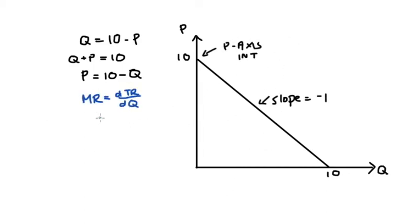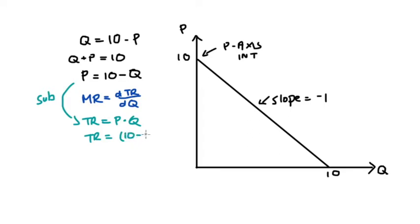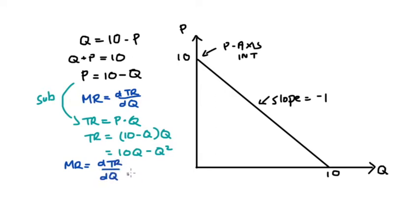Recall that marginal revenue is equal to the derivative of the total revenue function with respect to Q, and total revenue is equal to P times Q. An easy way to do this is to express total revenue as a function of only our quantity variable. Substituting in our inverse demand function P = 10 minus Q into our total revenue function, we're left with total revenue equal to (10 minus Q) times Q, which equals 10Q minus Q squared. Then we take the derivative to get marginal revenue: 10Q becomes 10, the exponent 2 comes out front giving 2Q, and we subtract 1 from the exponent. So marginal revenue is equal to 10 minus 2Q.